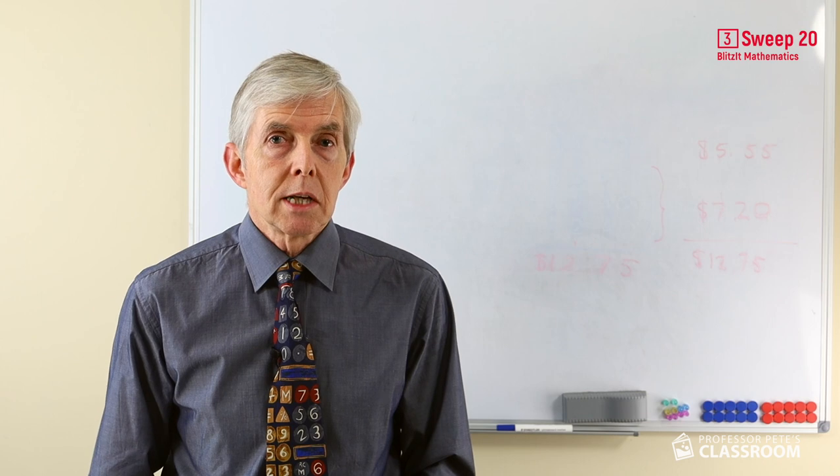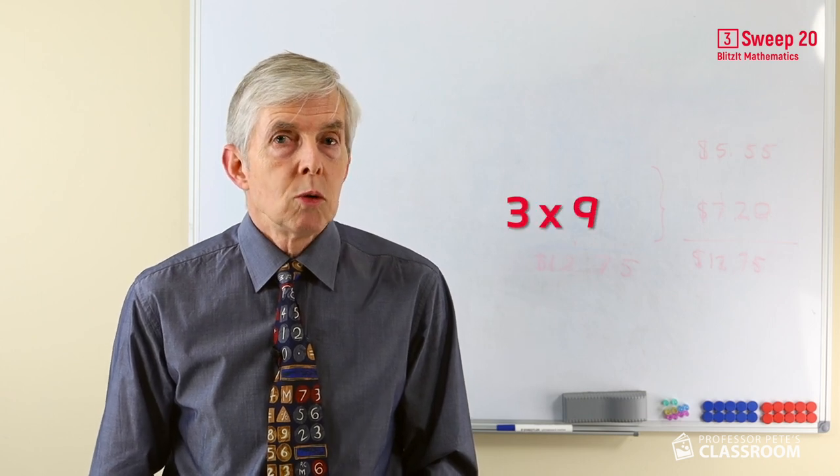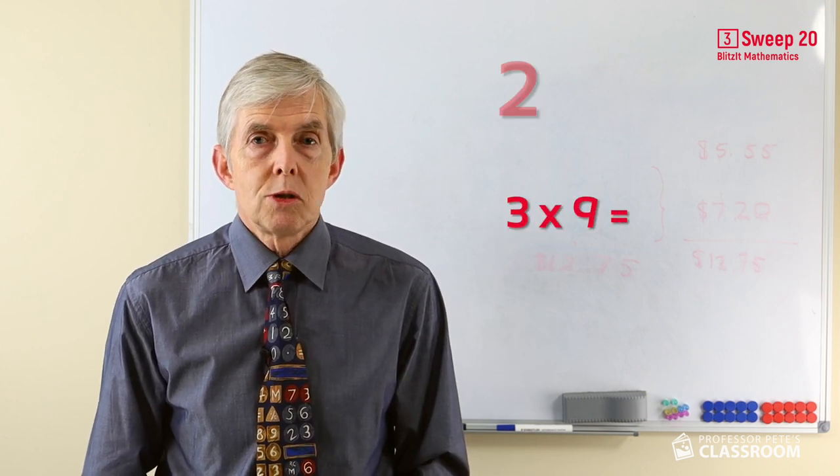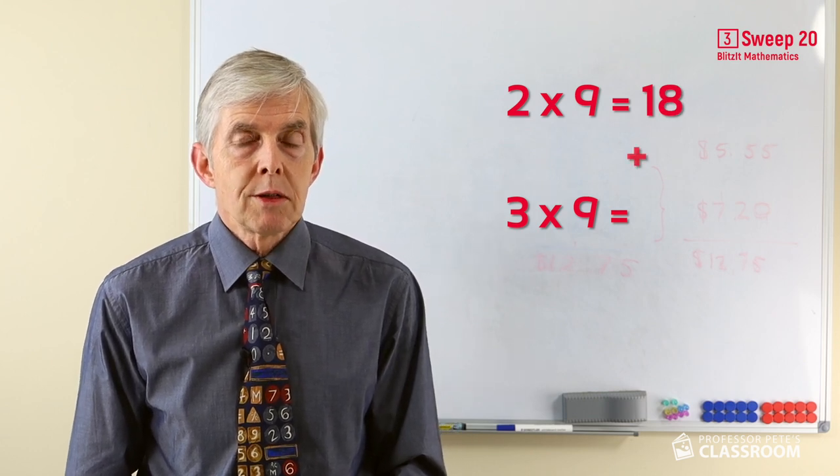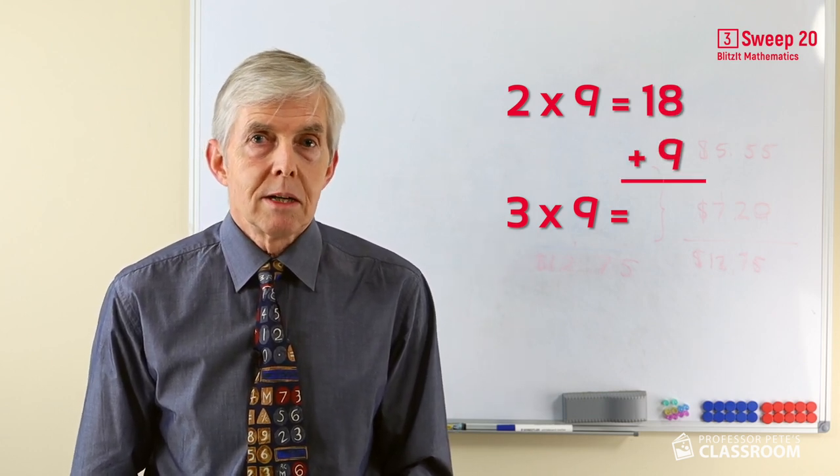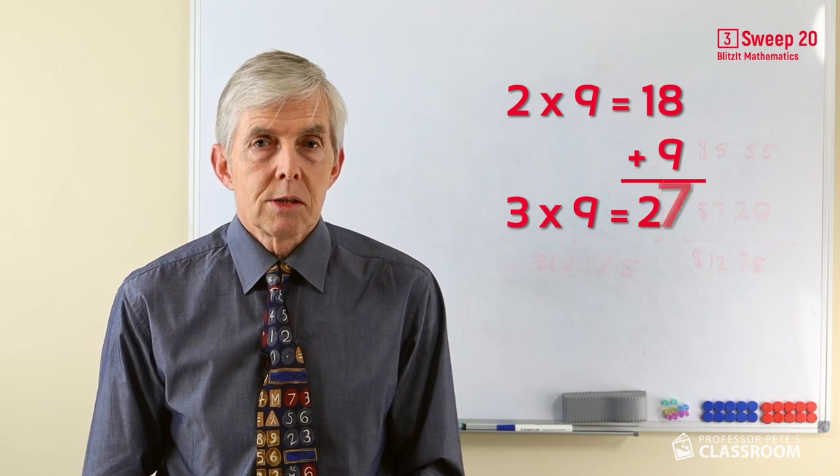Looking at the turnarounds, let's say 3 times 9, we do exactly the same thing. 2 times 9 is 18, that should be a 9 fact. We'll add on another 9. 18 plus 9, that's a near 10 fact and so on. So there it is.